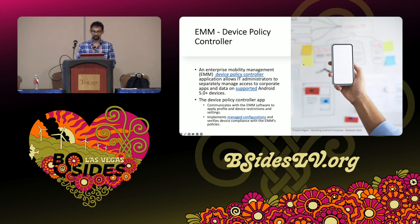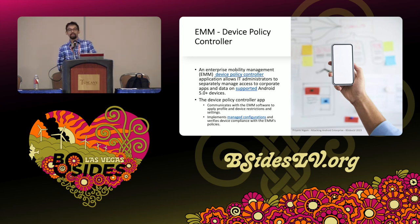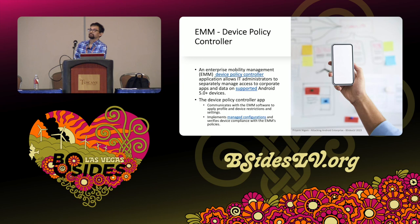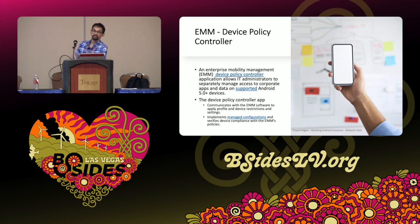Let's get some terminology. EMM — Enterprise Mobility Management — is an application that allows IT administrators to push policies onto your device. It's the first application you download when setting up. Under the hood, it uses the Device Policy Controller, the class Android Enterprise exports, which communicates with the EMM software. Think Microsoft Intune, Samsung Knox Manage, or MobileIron. The application helps you enroll the device, and on the server side it communicates with EMM software where your IT admin manages all policies.